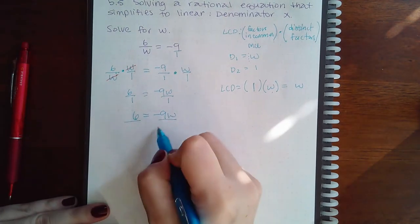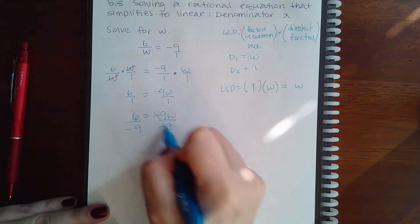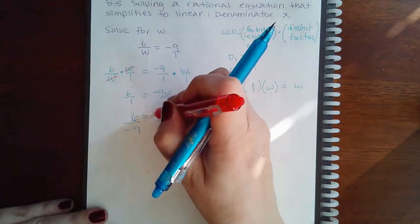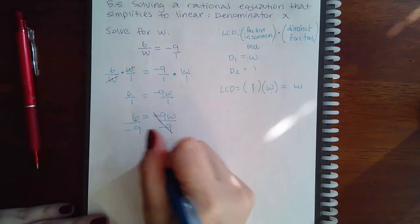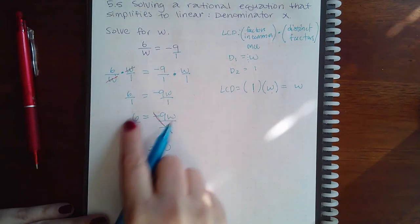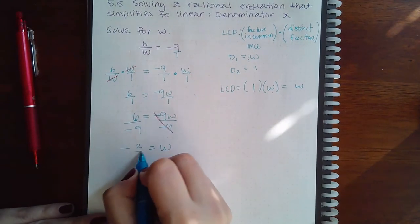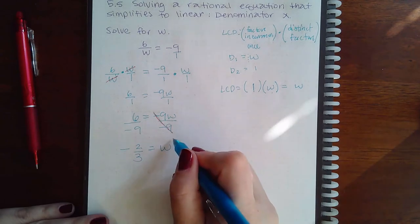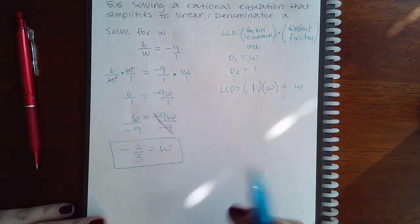We divide both sides by the coefficient. So then this will cancel, and I'll be left with w by itself, and this will reduce to negative 2 over 3. And so then my solution here is negative 2 over 3.